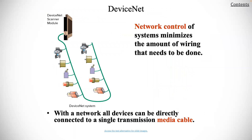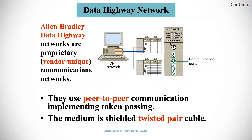A DeviceNet is a network control system that minimizes the amount of wiring that needs to be done. For the Allen Bradley data highway, this is an example of a proprietary network that is vendor unique. They use a peer-to-peer communication, and the medium is shielded twisted pair cable.